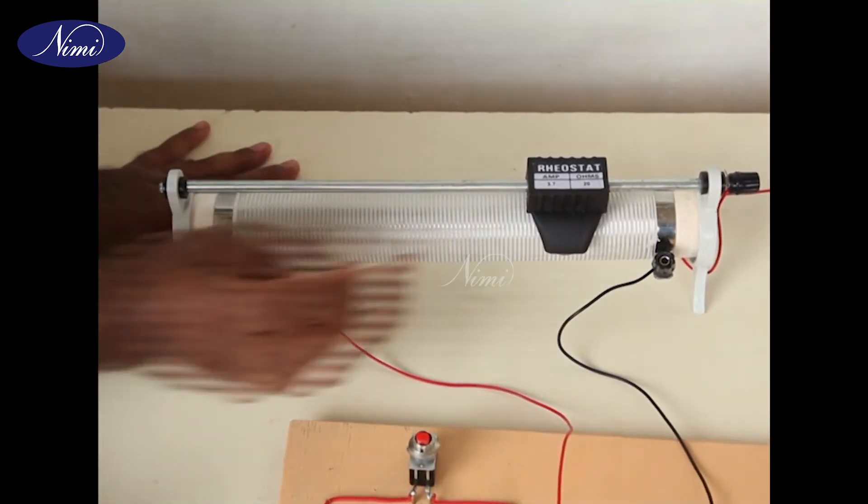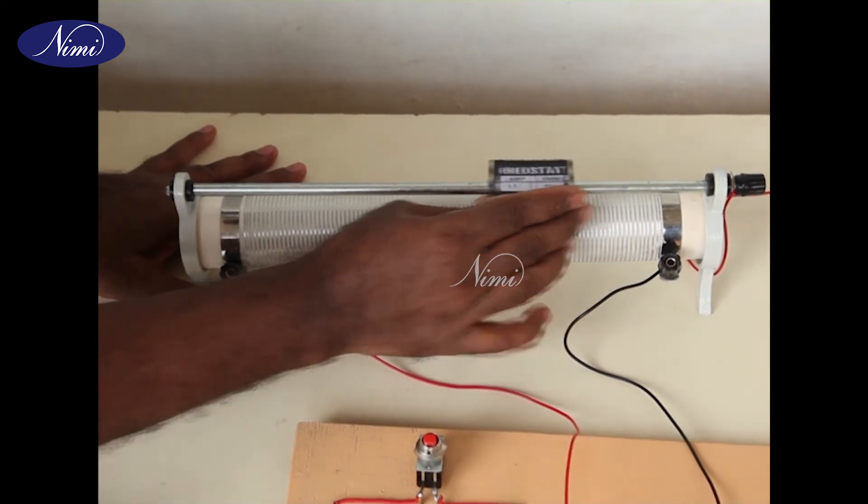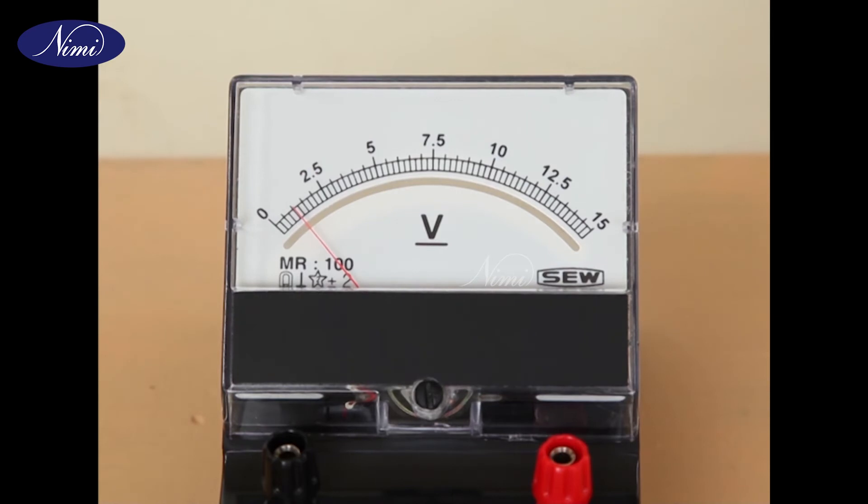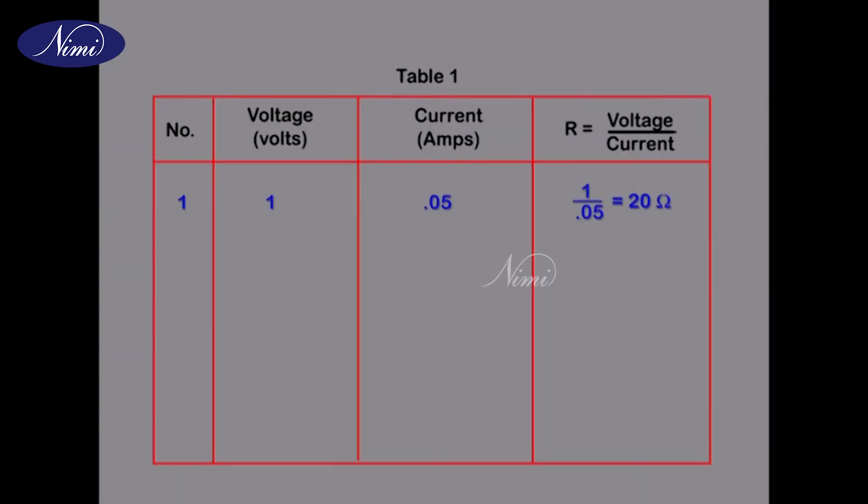Step 7: Apply different voltages by varying the rheostat arm of the potential divider in succession across the resistance. Step 8: Measure the voltage and corresponding current from the instruments. Step 9: Record the measured values in table 1.